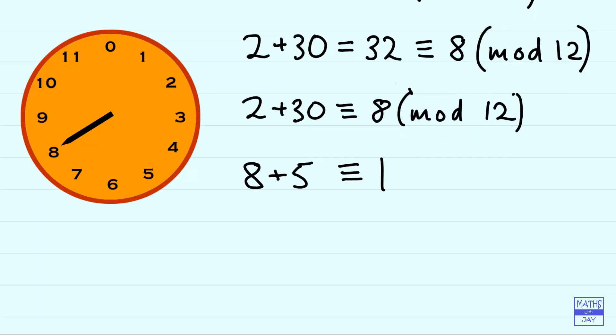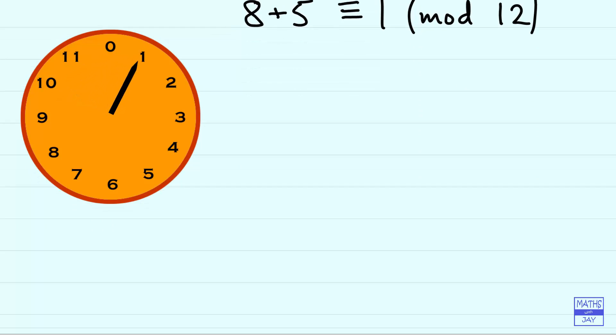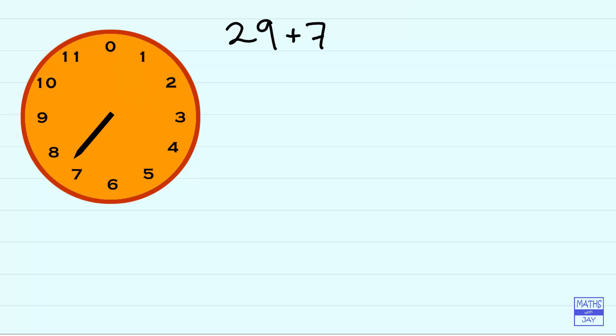And if we add 5 onto 8 we get 1 mod 12. We could start off with a really big number like 29 and add 72 onto that.